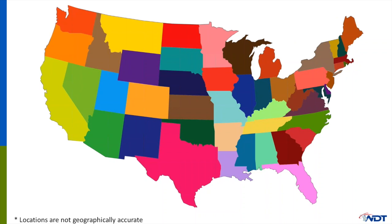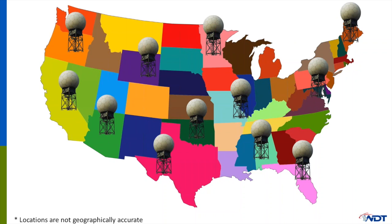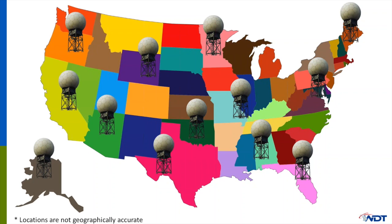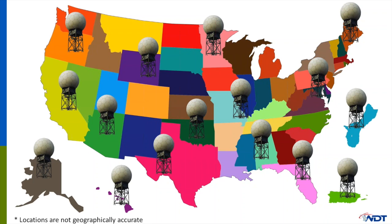The National Weather Service has radars located all over the United States. These are referred to as WSR-88Ds, which stands for Weather Surveillance Radar — 88 for the year it was developed and D for Doppler. There are a total of 164 of these sites in the United States, including Alaska, Hawaii, Guam, and Puerto Rico.